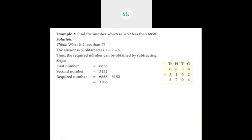Next question: find the number which is 3152 less than 6858. Just as 2 less than 7 means 7 minus 2 equals 5, similarly we subtract: 6858 minus 3152. That gives 8 minus 2 is 6, 5 minus 5 is 0, 8 minus 1 is 7, 6 minus 3 is 3 — so the required number is 3706.